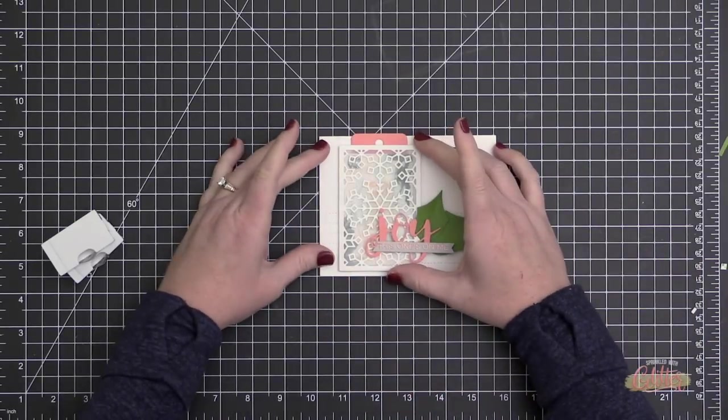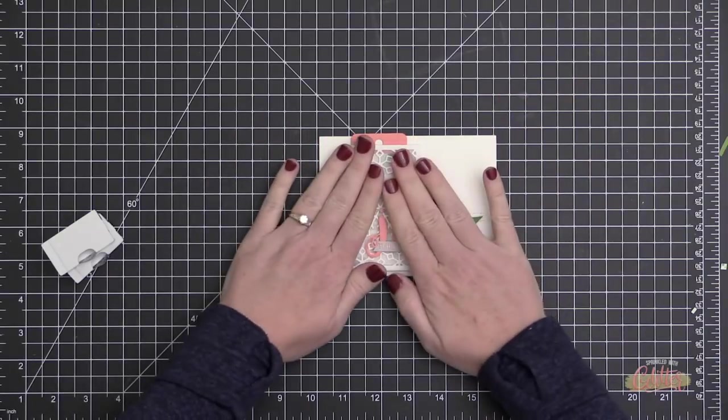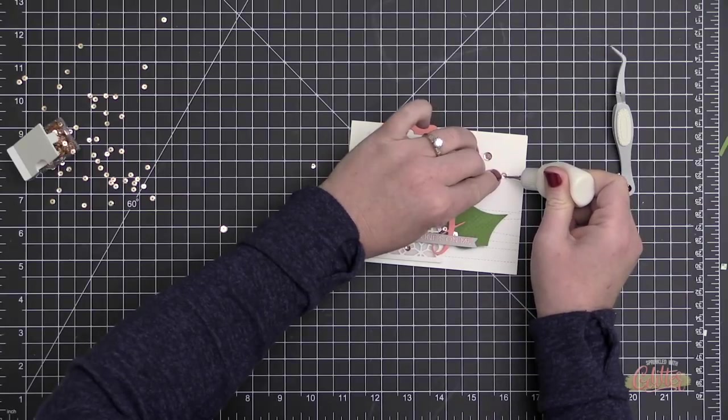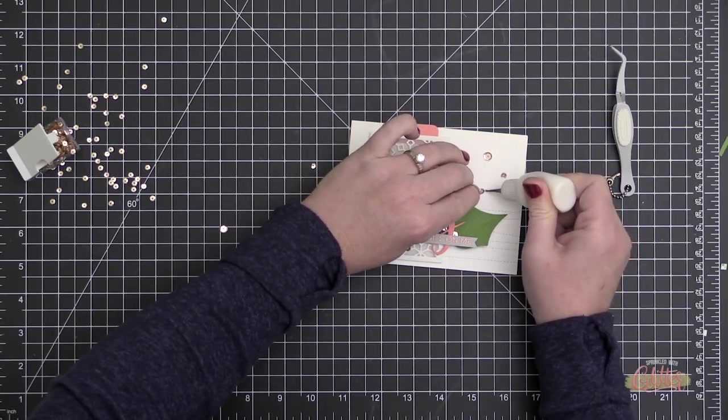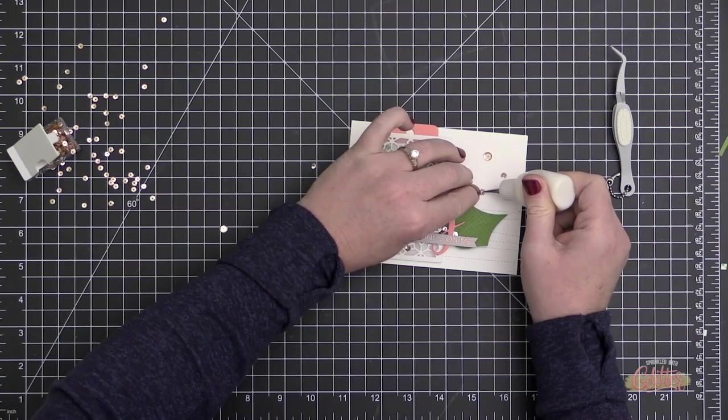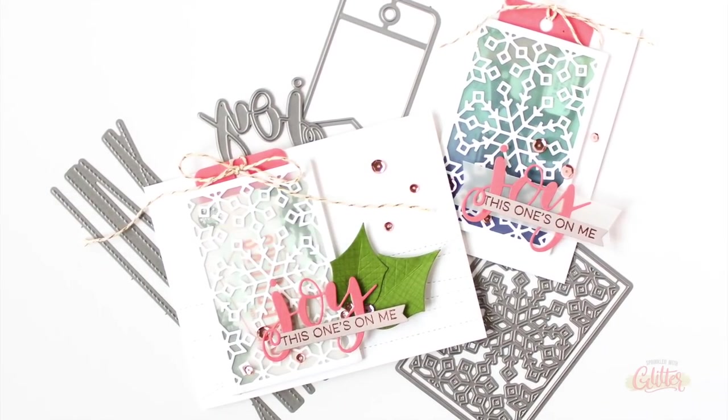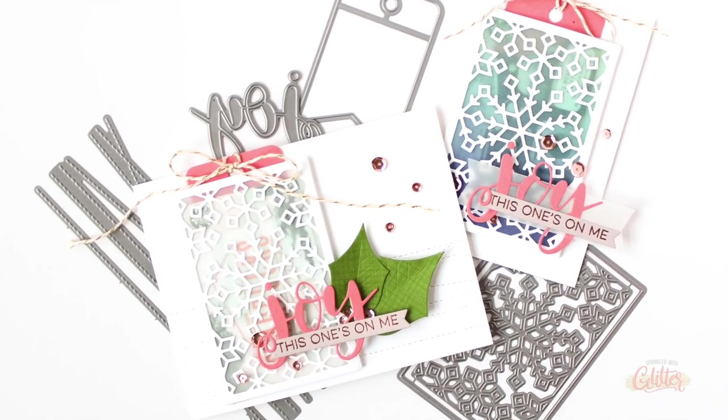Now to adhere this onto my A2 size card front, I am going to use some tape runner adhesive. So I'm just coating the back of that gift card pocket with some tape runner adhesive, and then I'm adhering that kind of towards the left side of this horizontal card base that I created with some Neenah heavyweight cardstock.